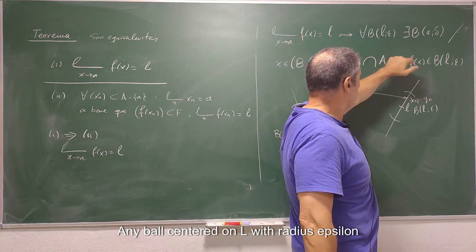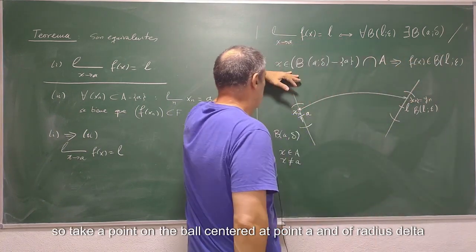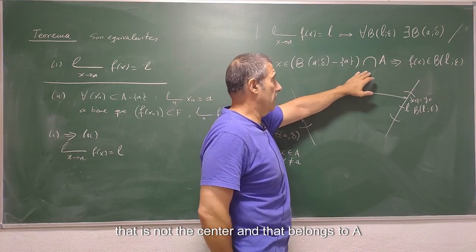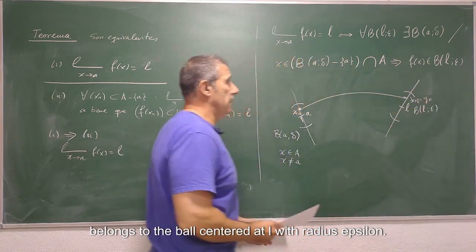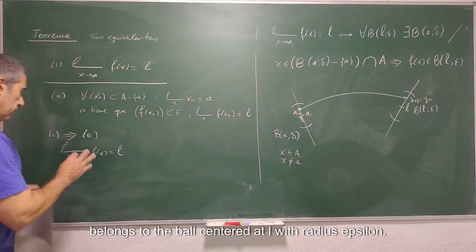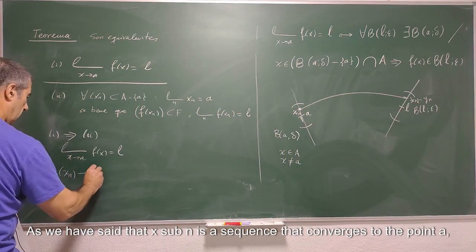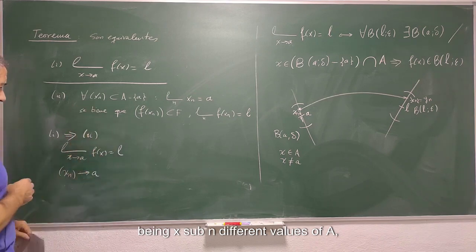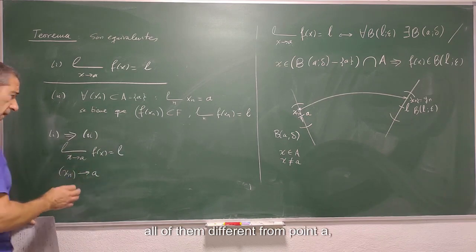Any ball centered on L with radius epsilon determines a ball centered at a with radius delta. So take a point on the ball centered at point a of radius delta that is not the center and that belongs to A. Implies that the image of that point belongs to the ball centered at L with radius epsilon.